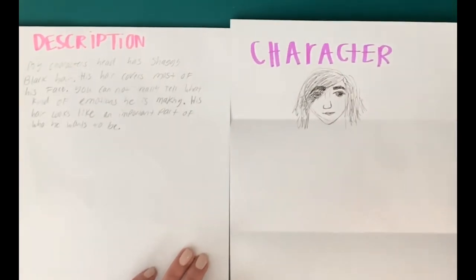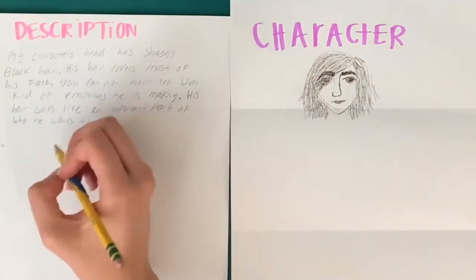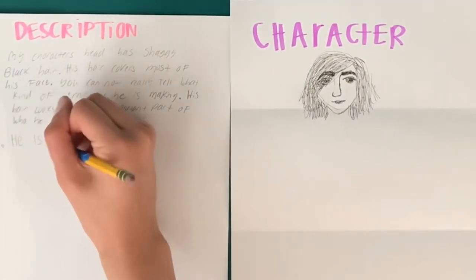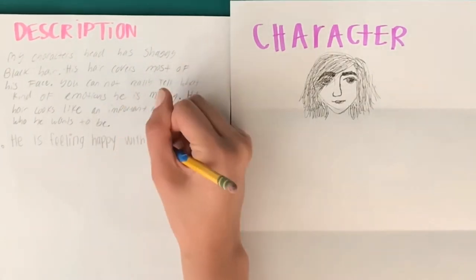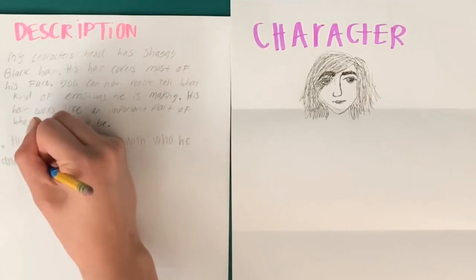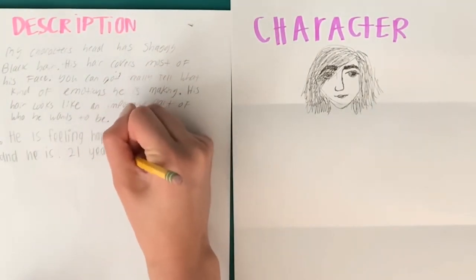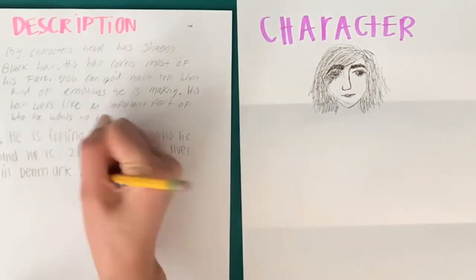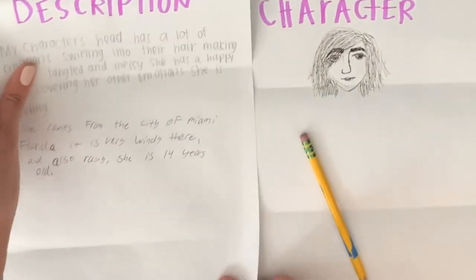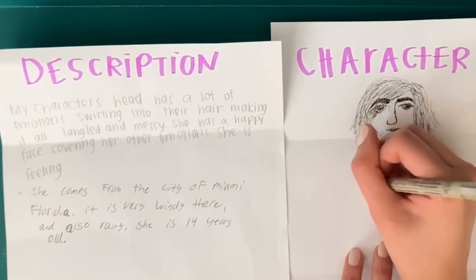Go ahead and keep your character page at your station in front of you. Now go back to your description page, the one that was passed to you earlier. Read the description carefully and go ahead and add two more sentences that describe where this character comes from and how old they are. Now that you've added a few more details, pass your description page to the person on your right again. Using the new description page you just received from your neighbor, let's draw a torso in the middle third of the character page.